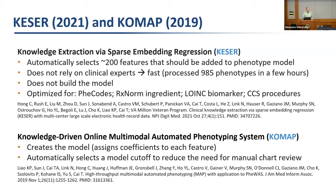COMAP then assigns coefficients to those features to build an actual model, and also identifies the optimal probability cutoff. Together, these reduce the need for chart review — you don't need clinical experts to specify features or build an extensive gold standard for determining cutoffs.